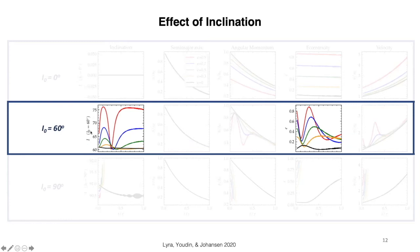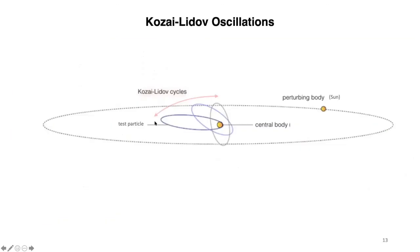What you see here is for an initial eccentricity of about 0.9, the eccentricity is going down, but the inclination is going up. This is typical of Kozai-Lidov oscillations.